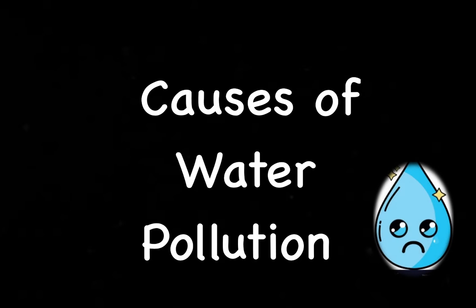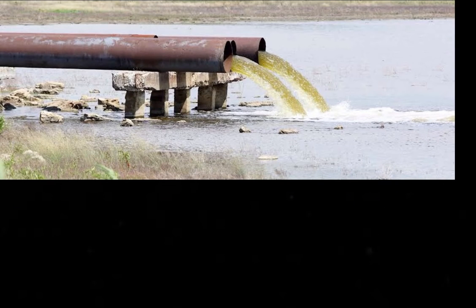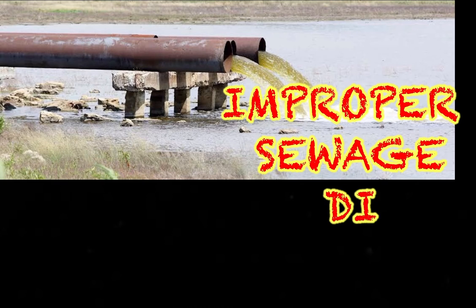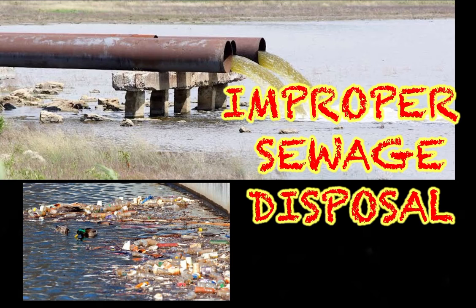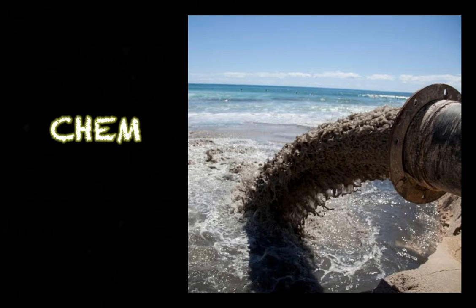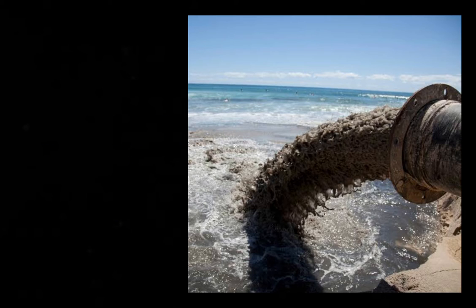Causes of water pollution: One of the main causes of water pollution is improper sewage disposal, that is waste or domestic waste being disposed of in nearby water bodies. Chemical waste dumping is another source of water pollution. Big factories are notorious for dumping chemicals into the ocean.